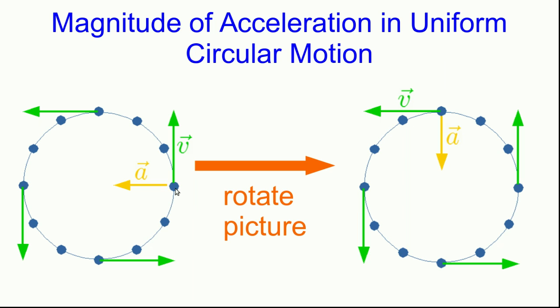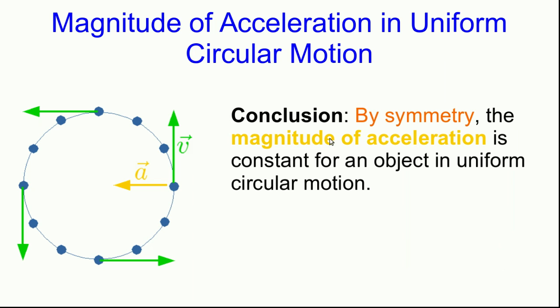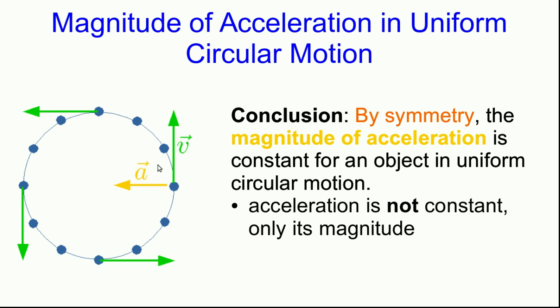And so this is telling us that by symmetry the magnitude of the acceleration has to be constant for any object moving around a circle at constant speed. Notice I did not say that the acceleration is constant. The acceleration isn't constant. It's continuously changing direction. But its magnitude is constant.